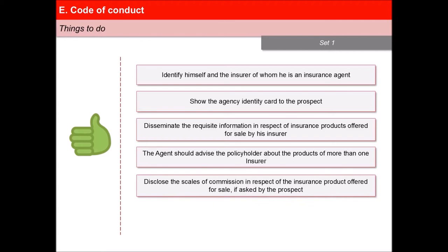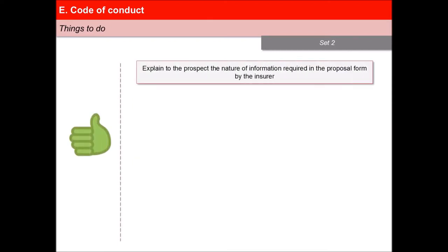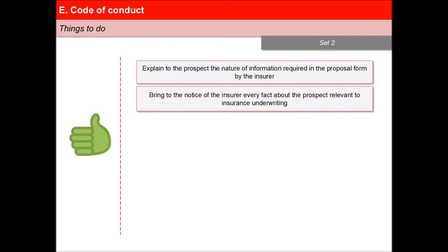The agent shall disclose the sales commission in respect of the insurance product offered for sale if asked by the prospect, indicate the premium to be charged by the insurer for the insurance product offered for sale, explain to the prospect the nature of information required in the proposal form by the insurer, and bring to the notice of the insurer every fact about the prospect relevant to insurance underwriting.